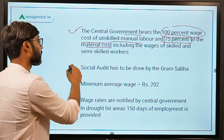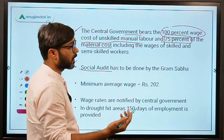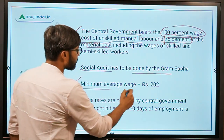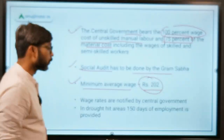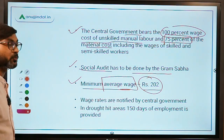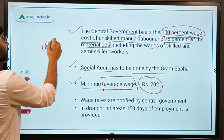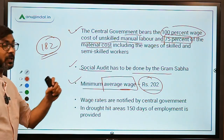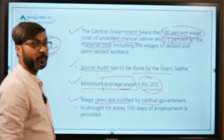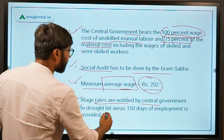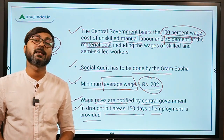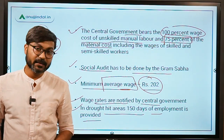There is a provision of social audit, which is to be done by the gram sabha. The minimum average wage under MNREGS is now rupees 202. Earlier it was 182, but under the Atmanirbhar package it was increased to 202. Wage rates are notified by the central government. In drought-hit areas, 150 days of employment is provided instead of the usual 100 days.